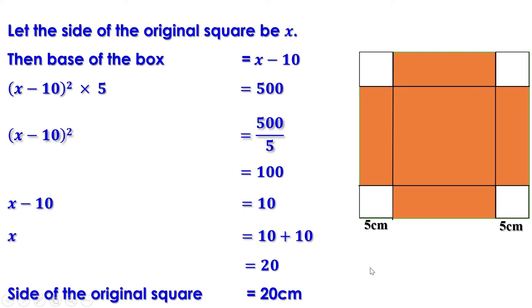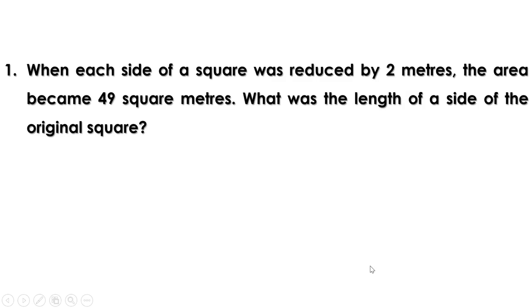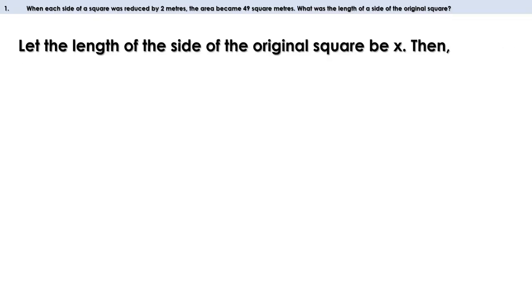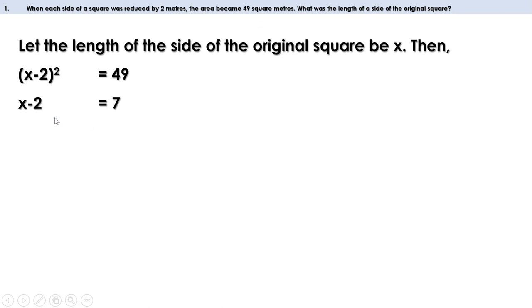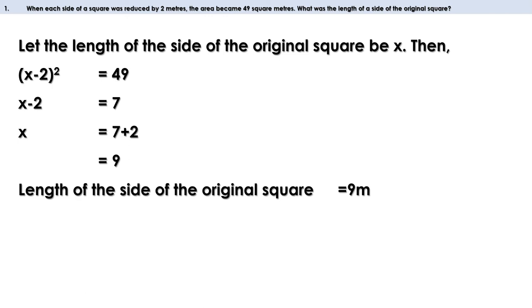Now let us do problems on page 81. First problem: when each side of a square was reduced by 2 meters, the area became 49 square meters. What was the length of a side of the original square? Let the side be x; when reduced by 2 it becomes (x - 2). Then (x - 2)² = 49. Taking square root: x - 2 = 7, so x = 9 meters. Verification: 9 - 2 = 7, and 7² = 49.